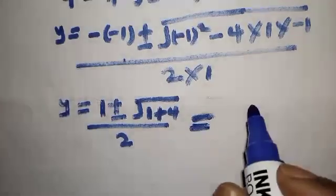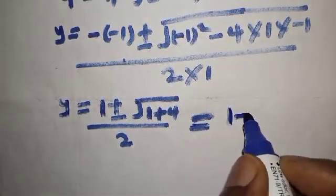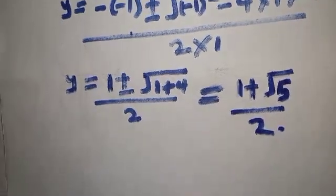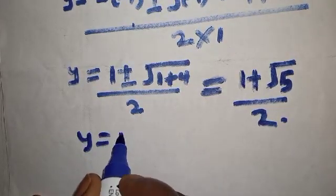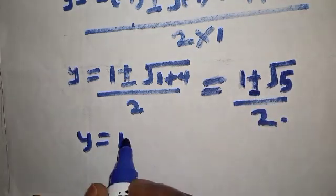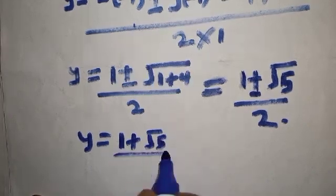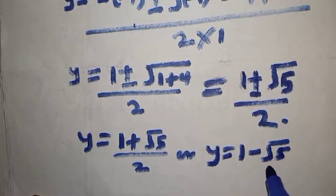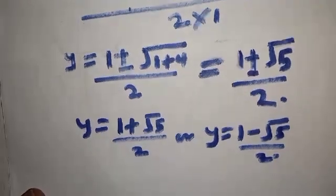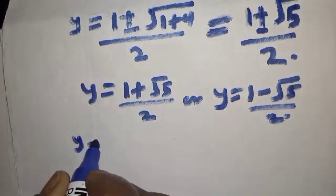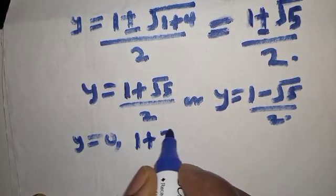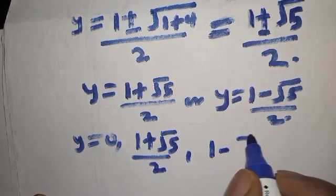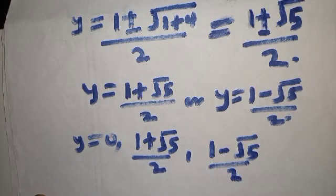Therefore, the two values of y are: y equals 1 plus square root of 5, all over 2, and y equals 1 minus square root of 5, all over 2.